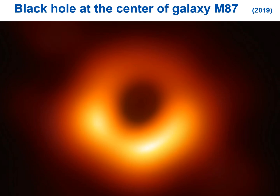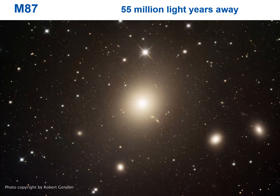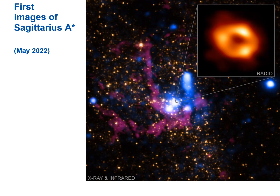In the M87 image, the dark region at the center is the event horizon, and the light around it is gas swirling around and being heated up. M87 is an elliptical galaxy — not a spiral with a disk like the Milky Way, but more a ball of stars and gas — located about 55 million light years away. Then in May 2022, we got the first images of Sagittarius A*, the black hole at the center of our own galaxy.